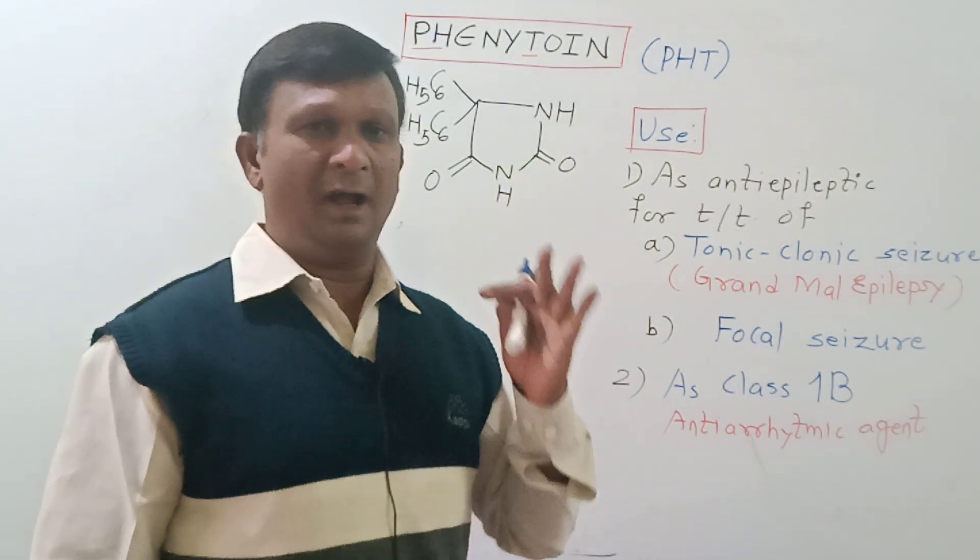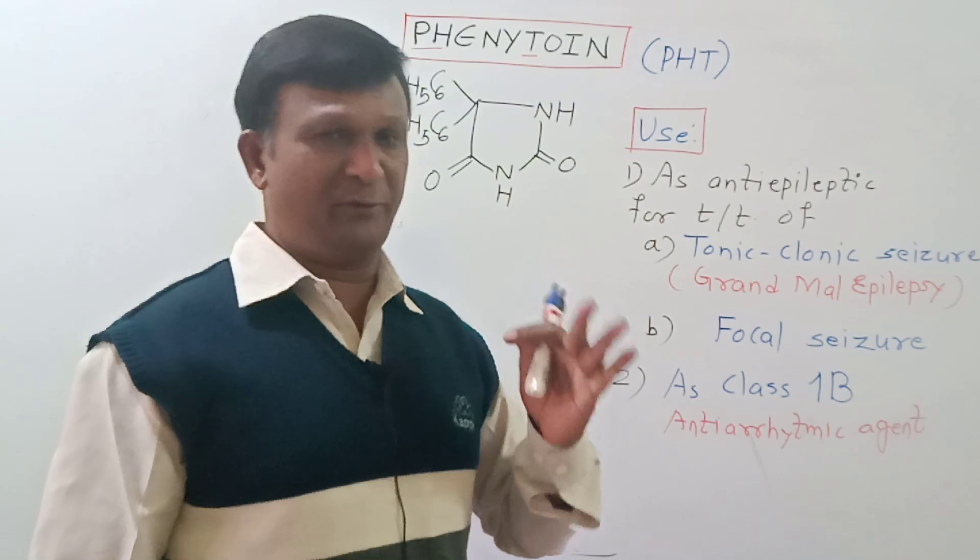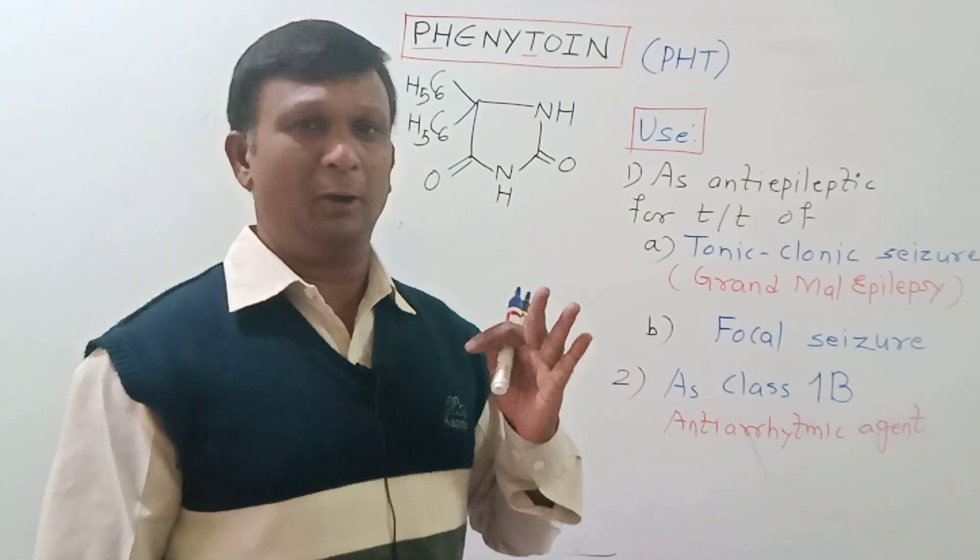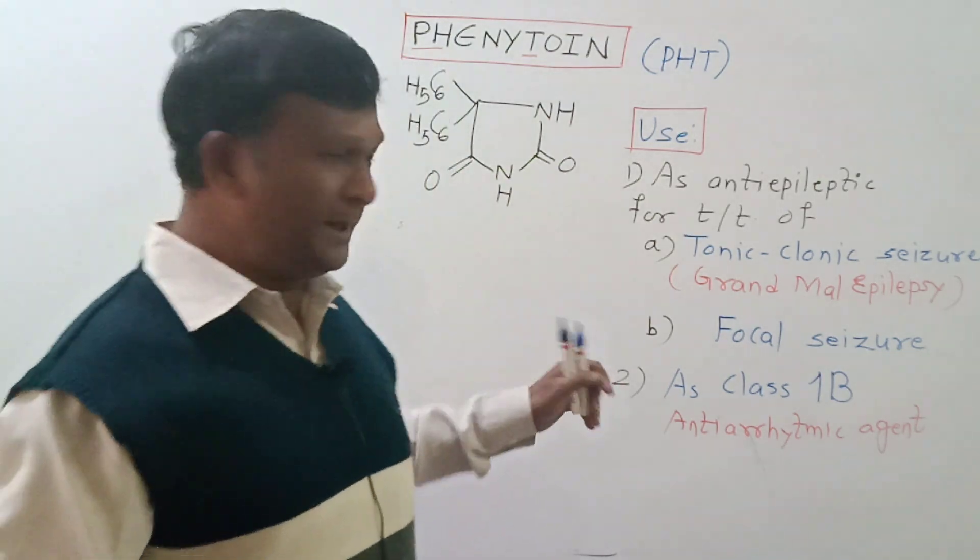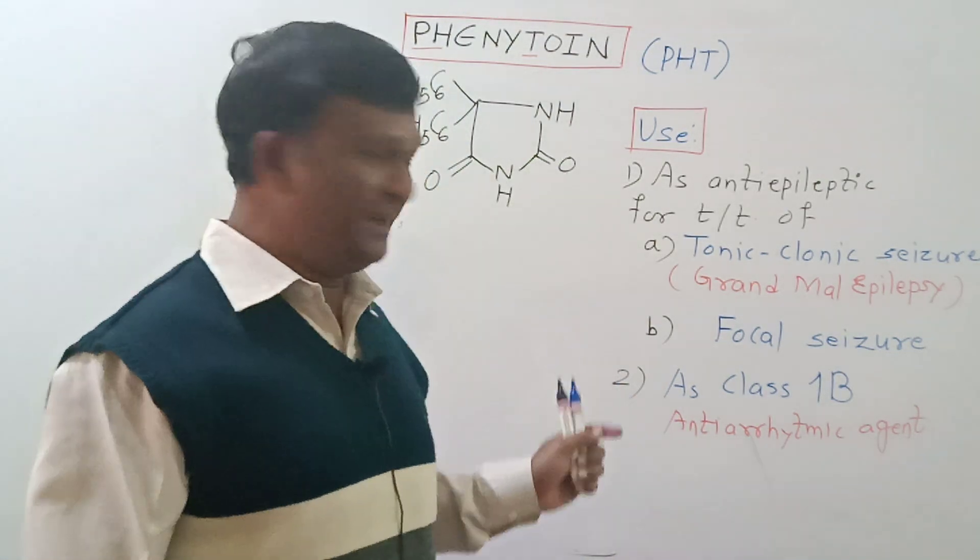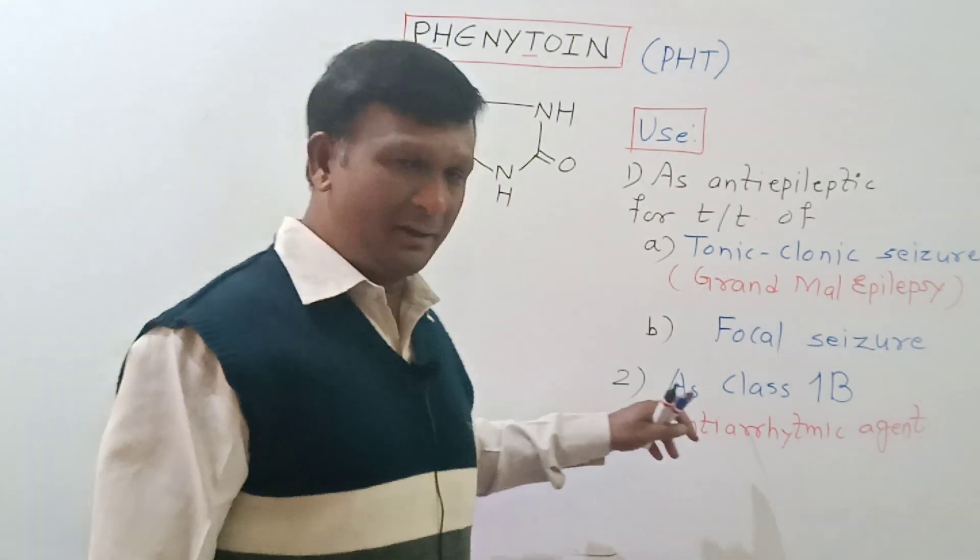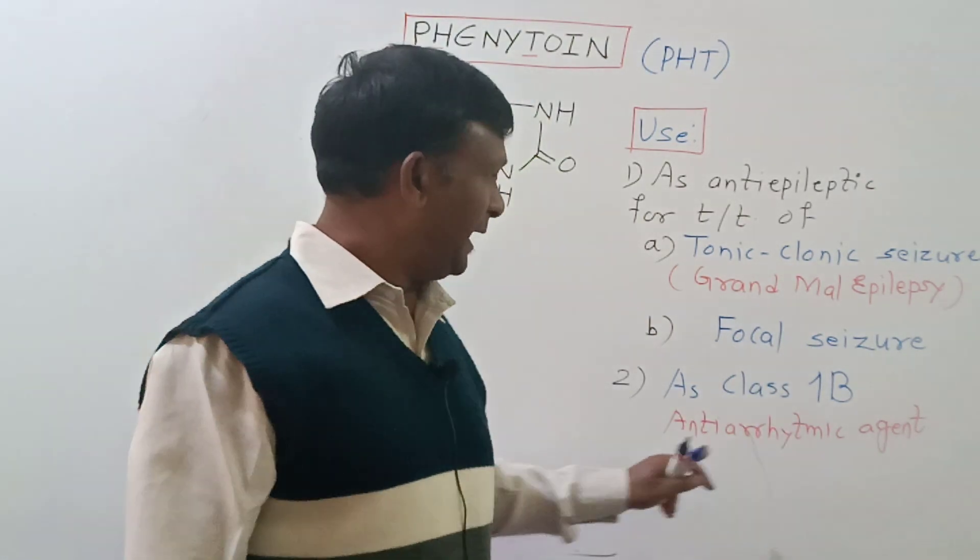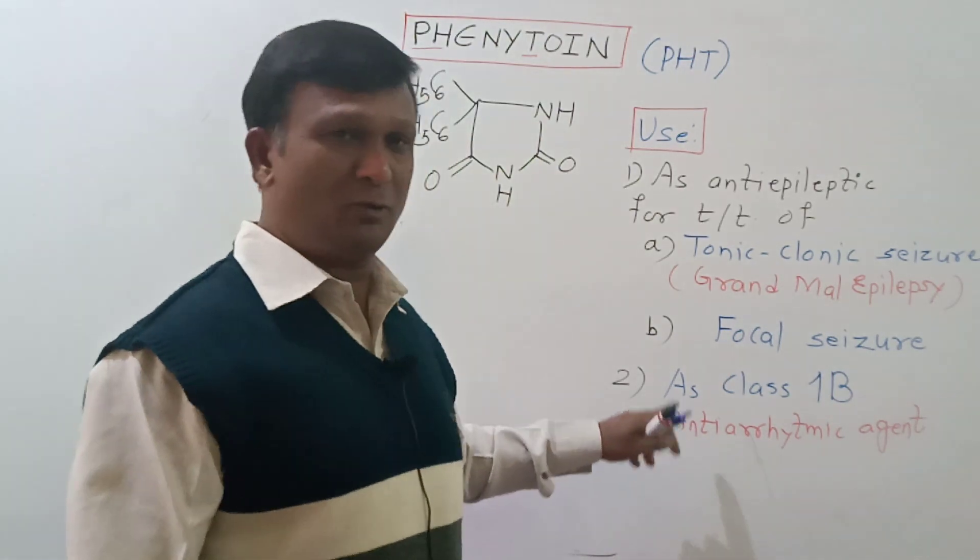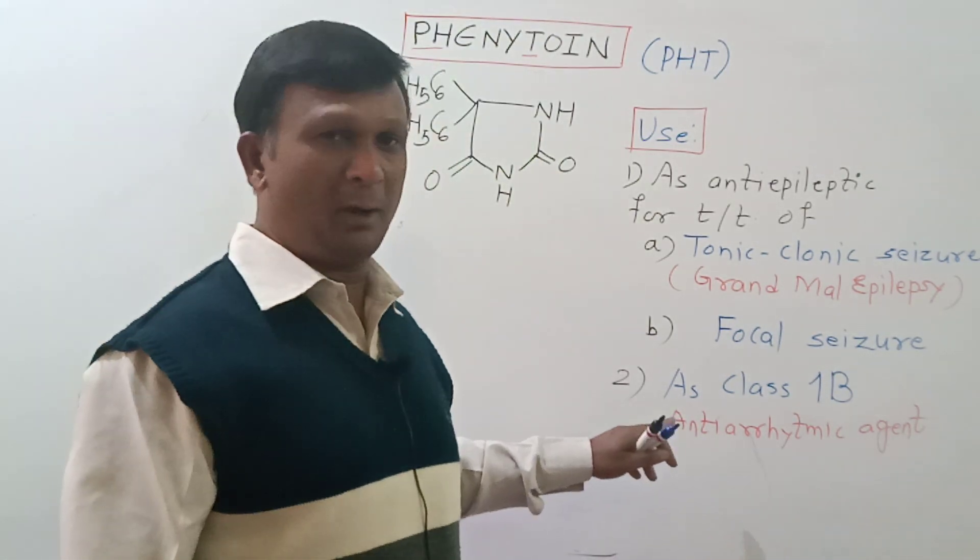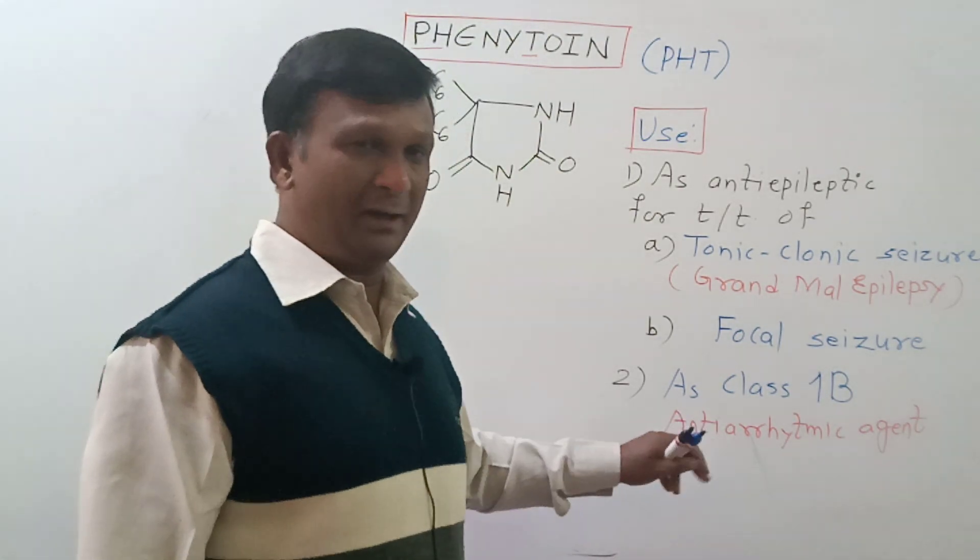The second use of phenytoin is as a class 1B antiarrhythmic agent. So this drug also finds its utility in treatment of some arrhythmic conditions including tachycardia.